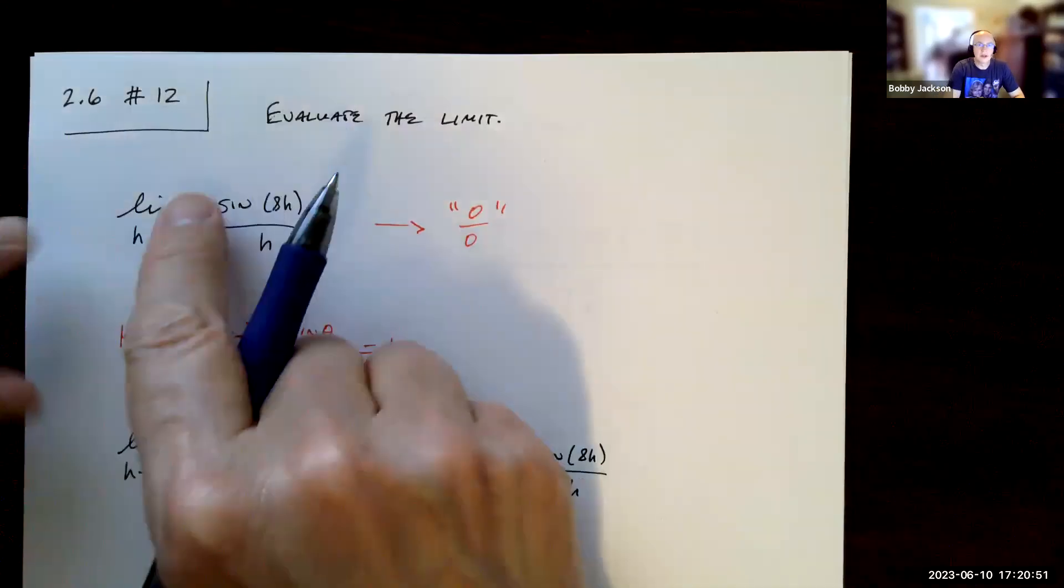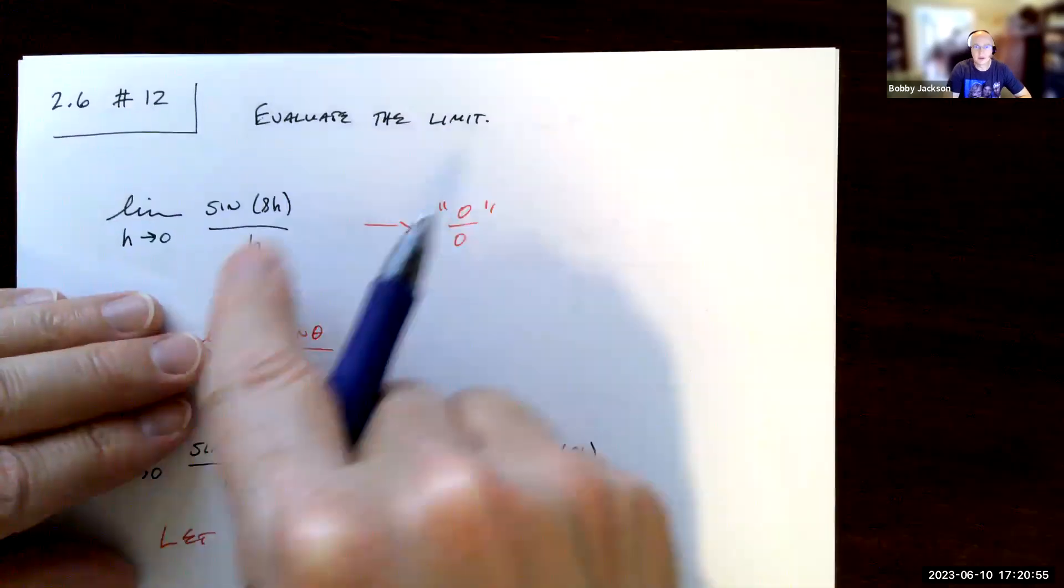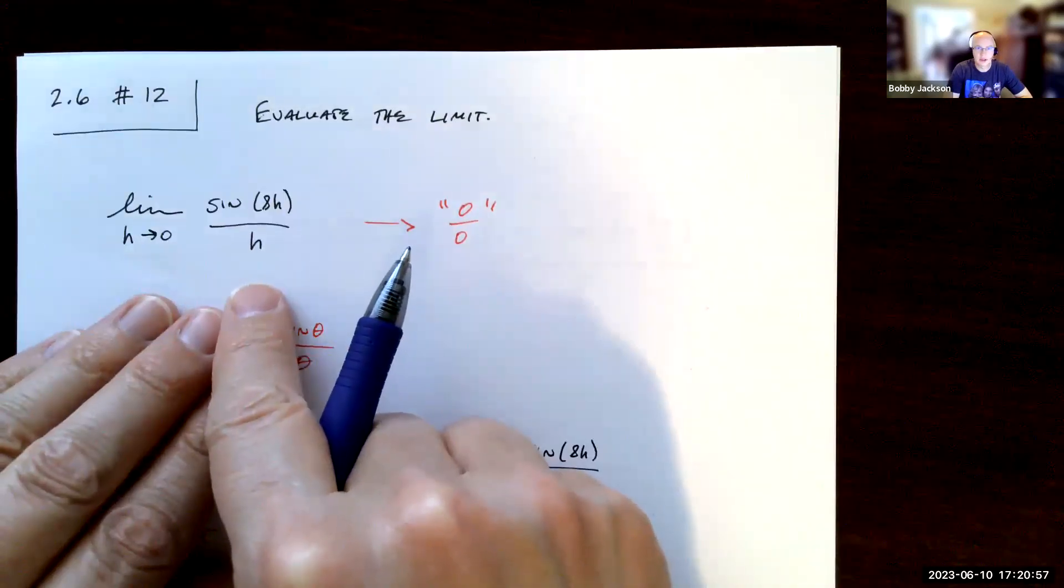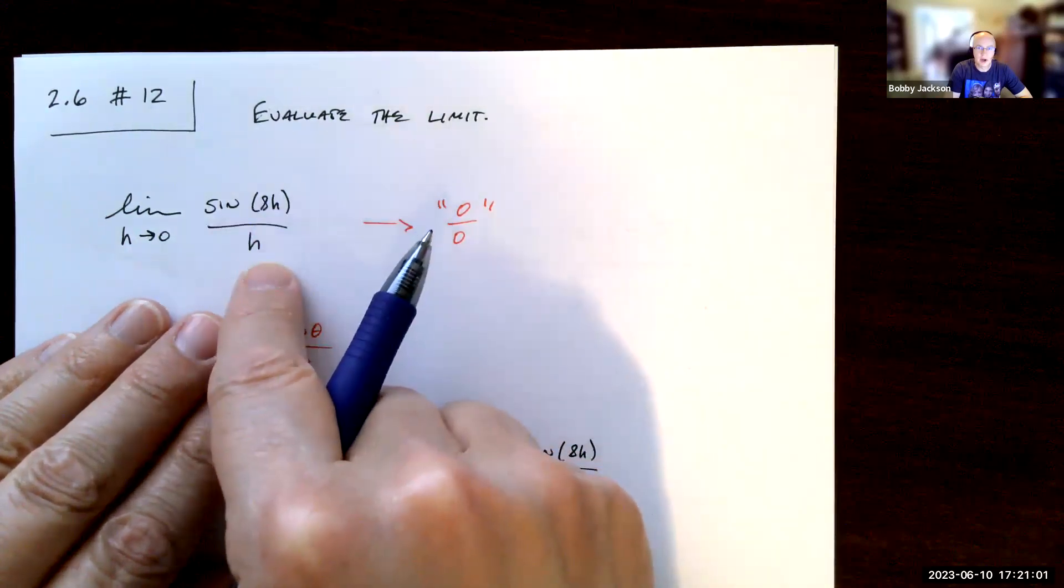Okay, we're going to look at number 12 in section 2.6. We're going to evaluate the following limit. There's a lot of these type problems in section 2.6, so limit as h goes to 0 of sine of 8h over h.